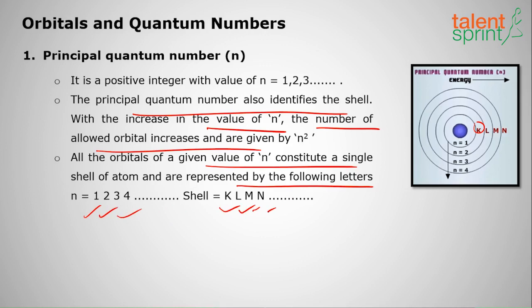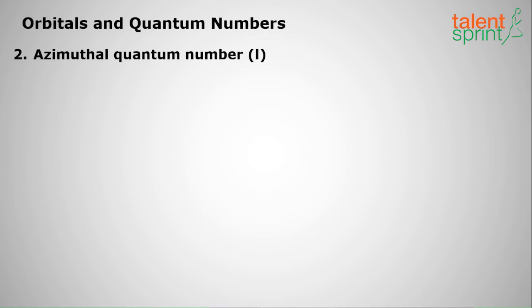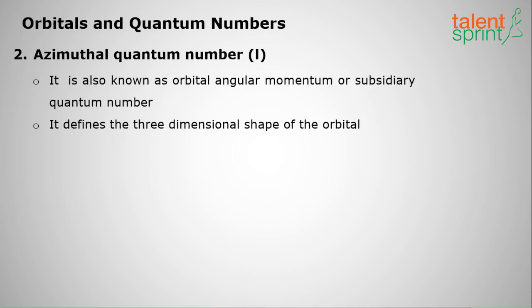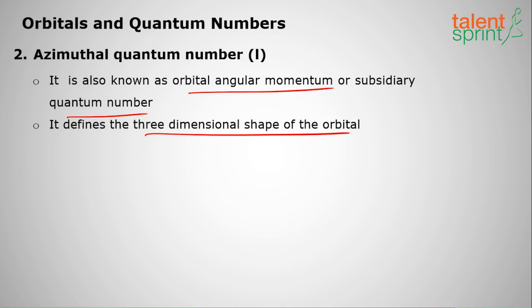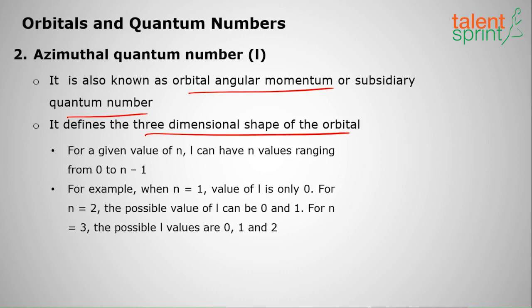The next quantum number is the azimuthal quantum number, l. It is also known as the orbital angular momentum or subsidiary quantum number, and it defines the three-dimensional shape of the orbital. The shape of the orbital is given by the azimuthal or angular momentum quantum number. For a given value of n, l will range from zero to n minus one.